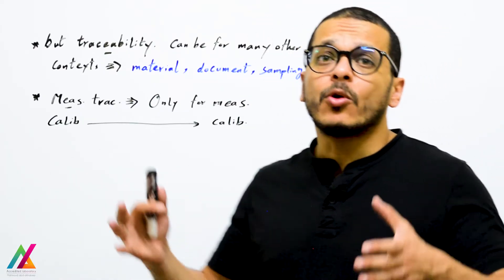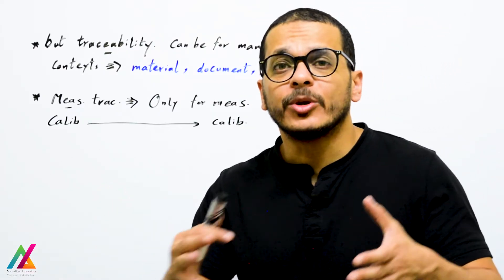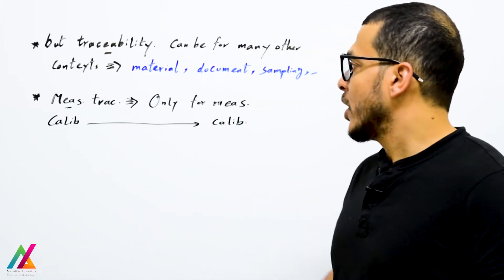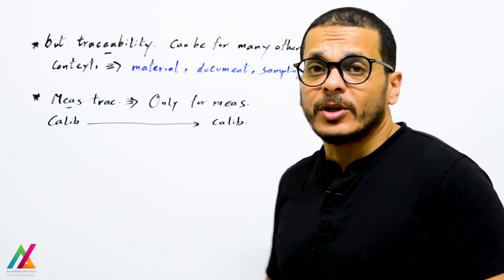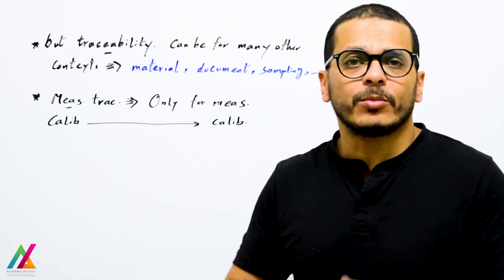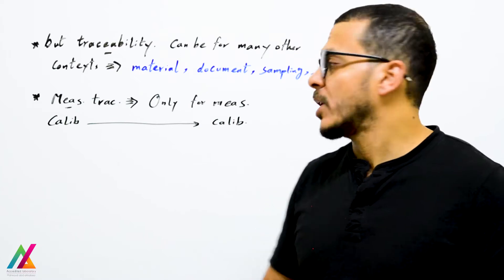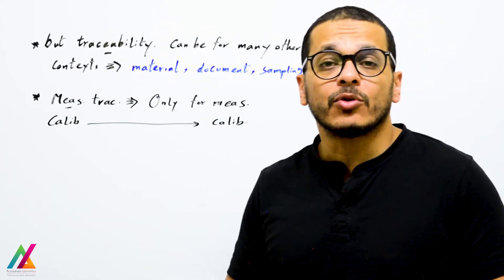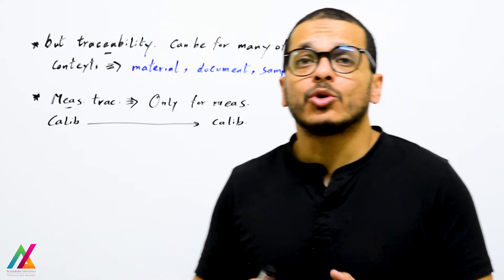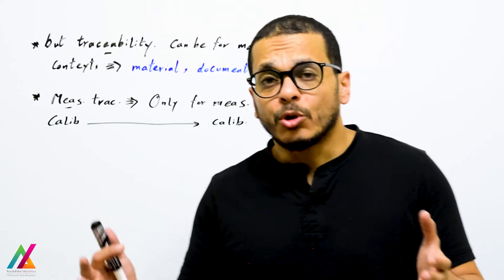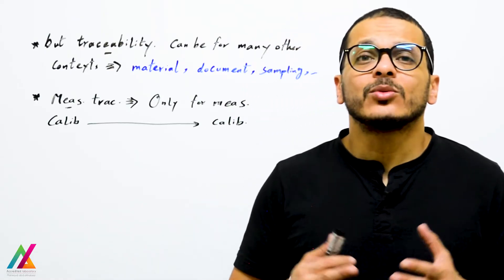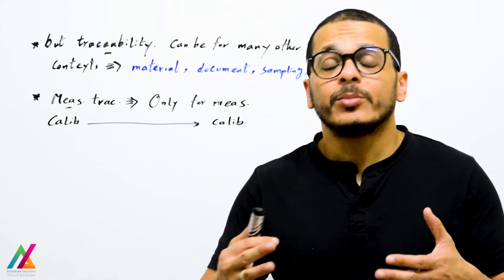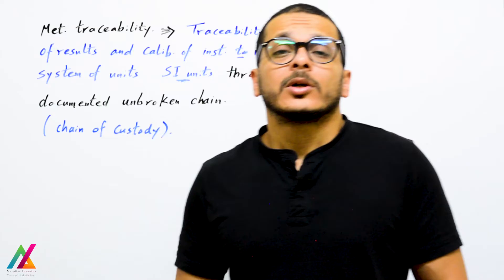We need to focus more on measurement of results and calibration of instruments. 'Measurement traceability' applies only to measurement of results, and 'calibration traceability' applies only to calibration of instruments. So 'metrological traceability' is more logical and common to both of them.